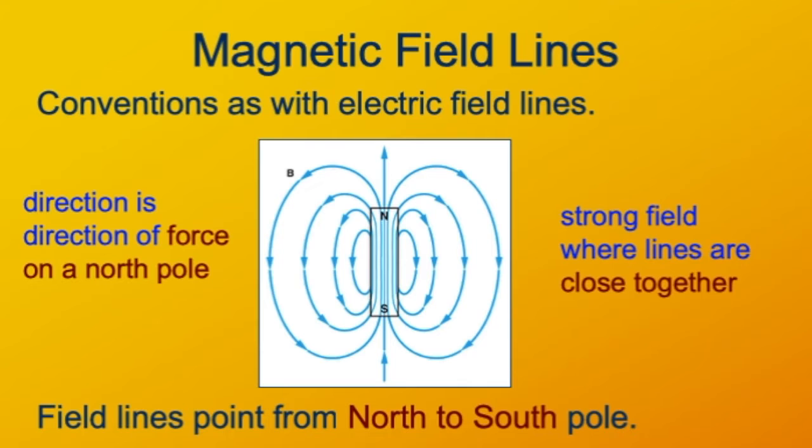Since magnetic field lines show the direction of the force on a north pole, field lines are going to point away from magnetic north poles, and they're going to point toward magnetic south poles because north poles repel other north poles and south poles attract north poles.